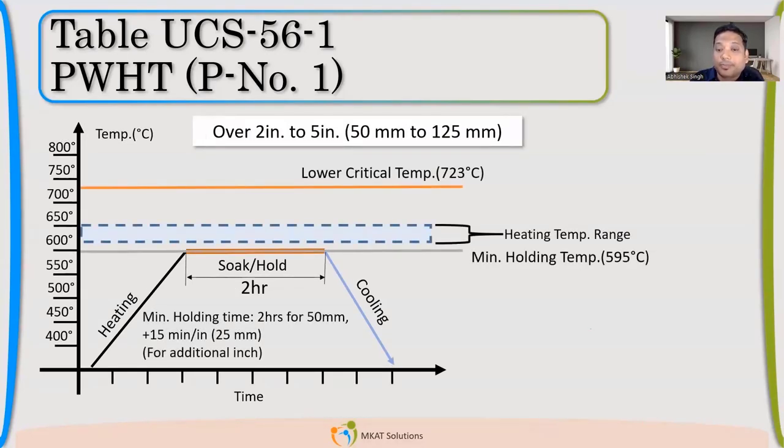Okay, now for thickness which is more than 50mm, so for that minimum holding time is 2 hours because for 50 anyway 2 hours will come. Then for each additional inch over 50, same philosophy we can follow: 15 minutes for additional inch. So 15 minutes incremental time will get added. Temperature is same, 595. Temperature does not change because of thickness.